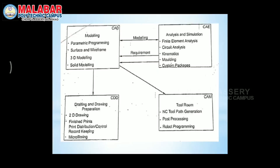In the CAM module: tool room NC toolpath generation, post processing, and robot programming. For a machine element, we do complete part programming, post processing, and robot programming — completing the full CAM application. All 4 modules are integrated in the production shop in the manufacturing field.